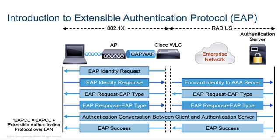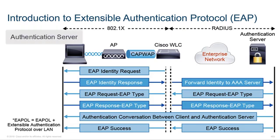There are three basic pieces to 802.1X authentication. There's something called a supplicant, which is a software client that runs on a Wi-Fi enabled workstation. There's the authenticator, which is the Wi-Fi access point. And then there's the authentication server, which is an authentication database — usually something like RADIUS or TACACS Plus.